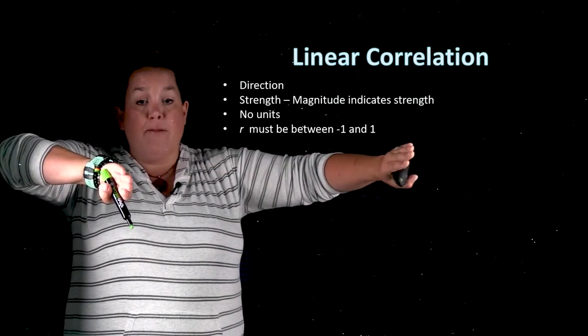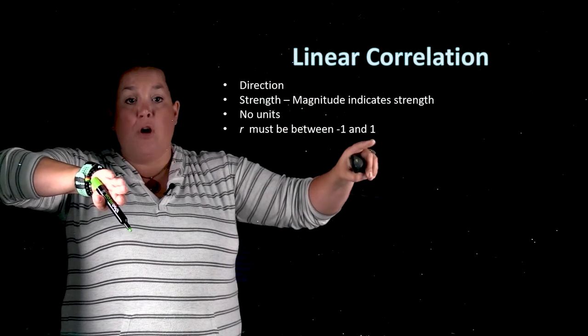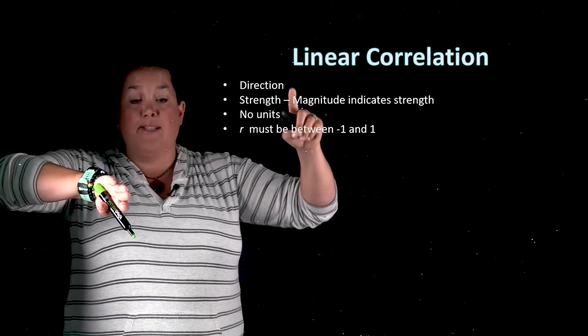The closer it is to either end of that spectrum, the stronger the relationship. Remember that that negative 1 is just as strong as that positive 1. The sign is indicating the direction.